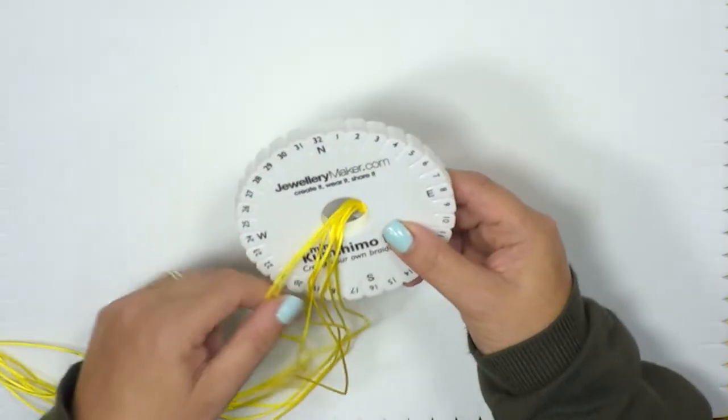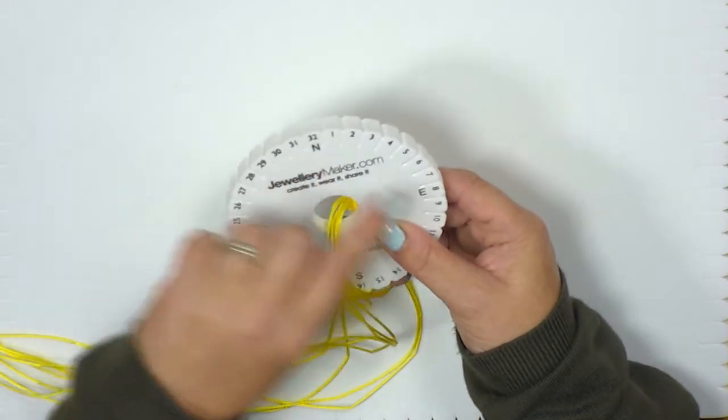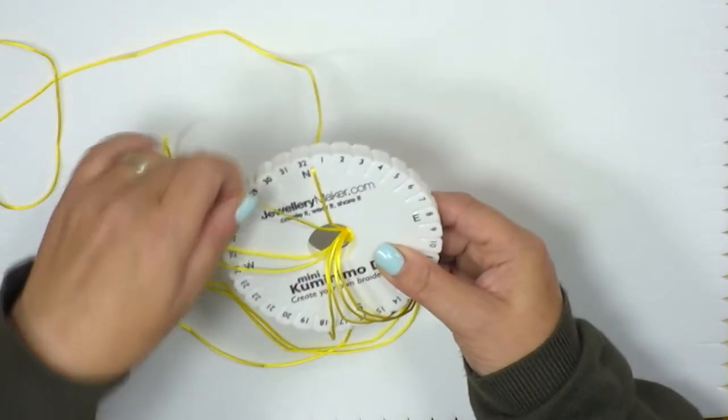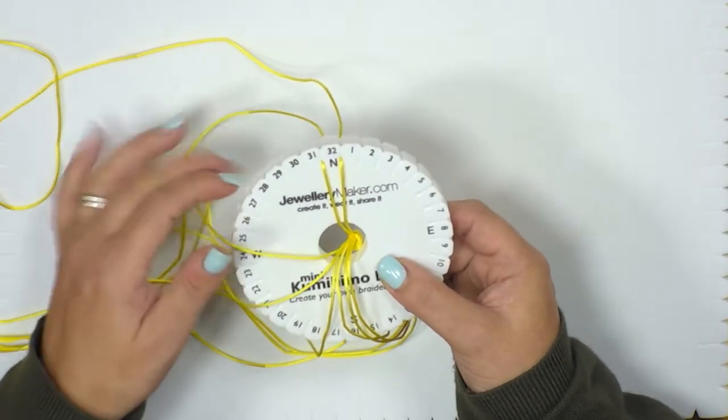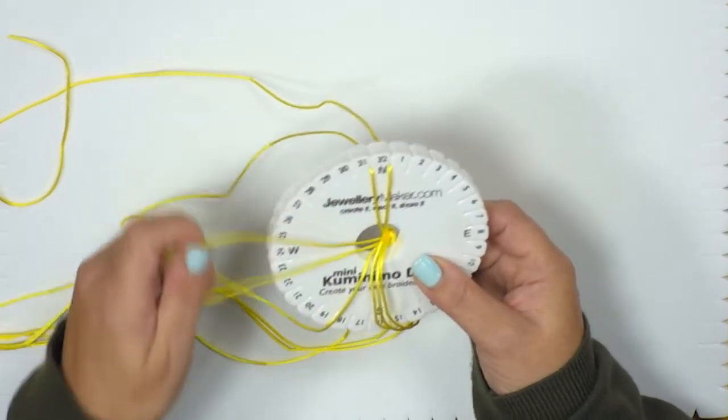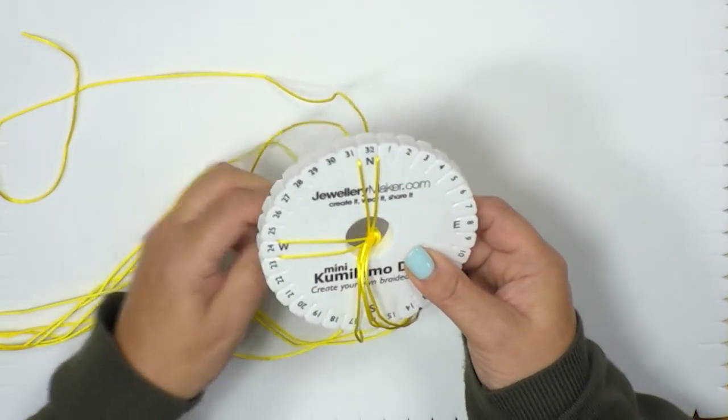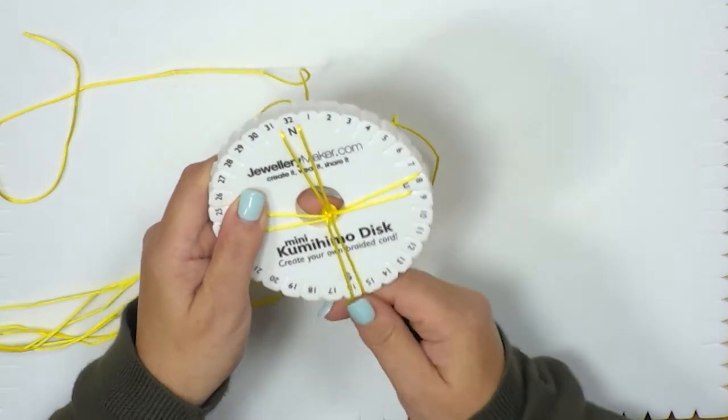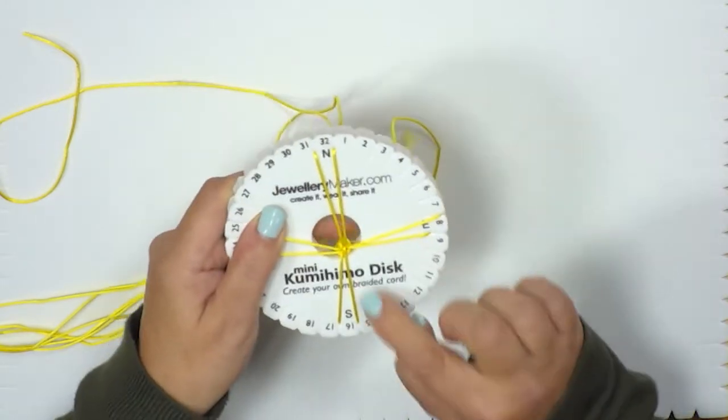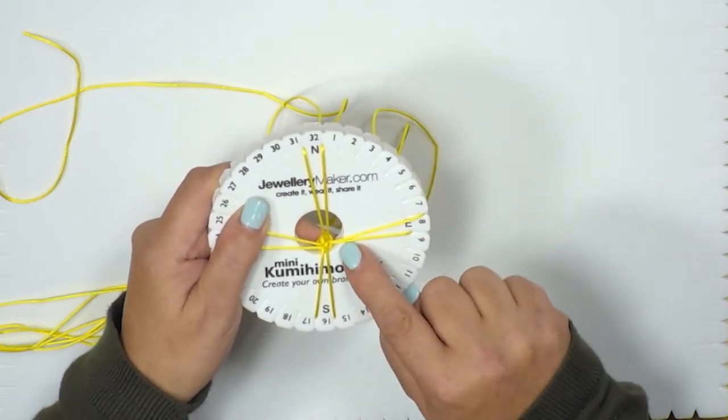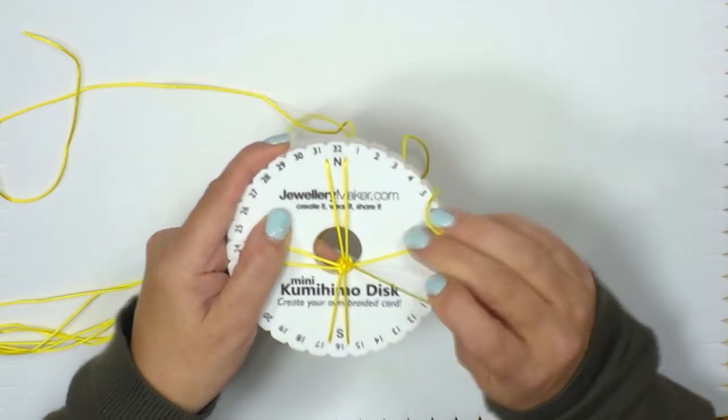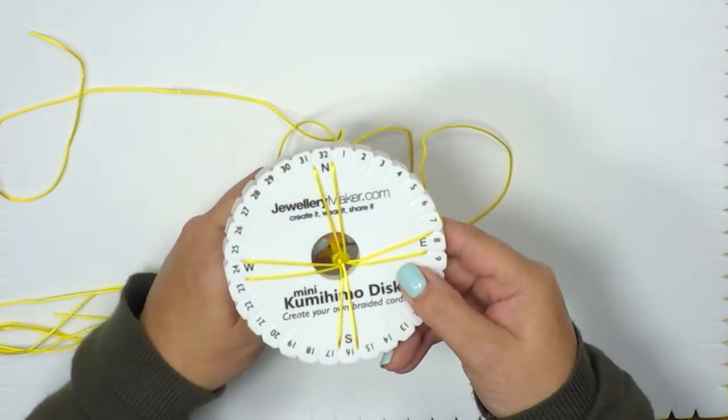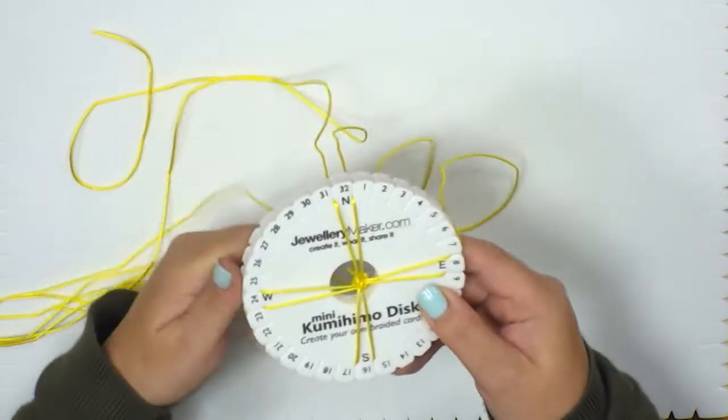We're now going to start to arrange these cords so that we have two cords on either point of our kumihimo disc. So we take the first two cords and pop them one either side of the north. We're then going to take the next two cords and we're going to pop them again this time either side of the west. The other two across to the east and then the last two down to the south. And then just taking the time just to check that they're not crossed over at all. So here I can see that my east cords are crossed over. So all I need to do is just take that one out and just lay them flat against the board. So now I've got nothing crossed over in the middle and they're all nice and neat in the center of those letters.